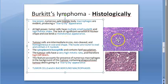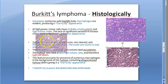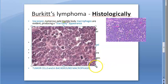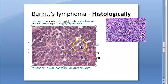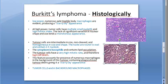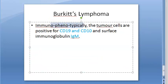Histologically, in low power you will see starry sky appearance. In high power, small tumor cells with basophilic cytoplasm, round to oval nuclei with 2 to 5 nucleoli, and a very homogenous appearance. In the background of tumor cells, there will be many macrophages giving the starry sky appearance. On immunophenotyping, these tumor cells will be positive for CD19, CD10, and surface immunoglobulin IgM.